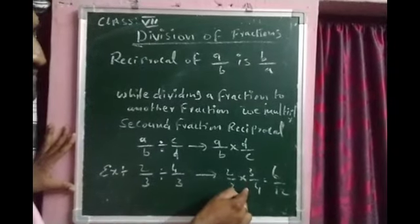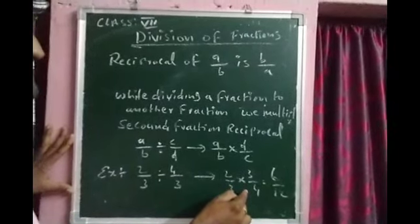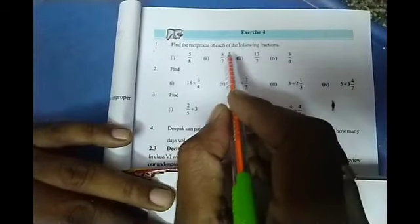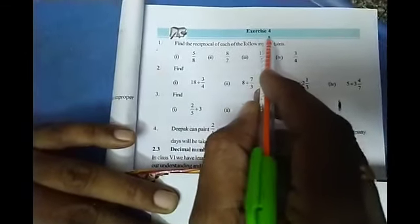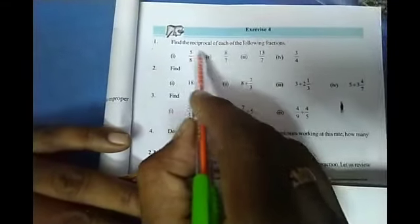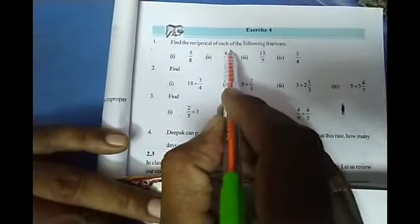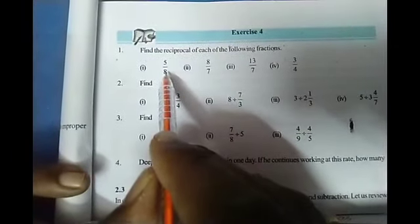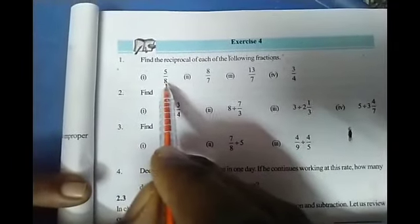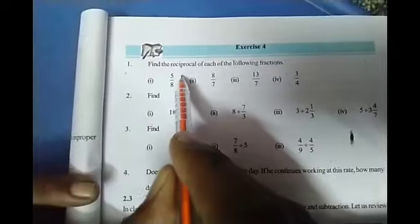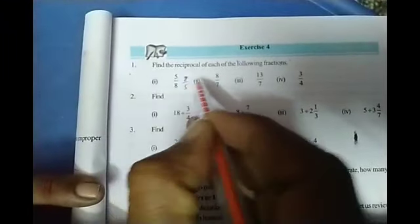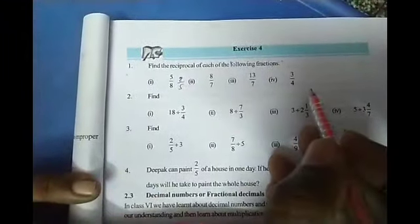Now we are going to observe exercise 4. Find the reciprocal of each of the following fractions. Reciprocal means reverse. 5 by 8 means its reciprocal is 8 by 5. Very easy — you try to do the remaining ones.